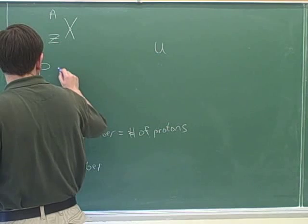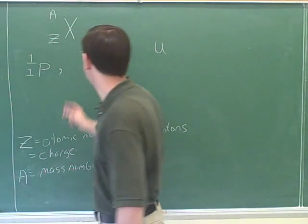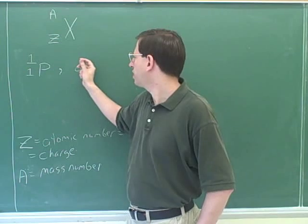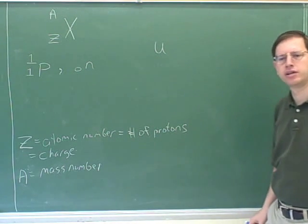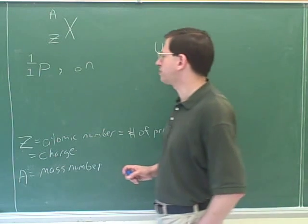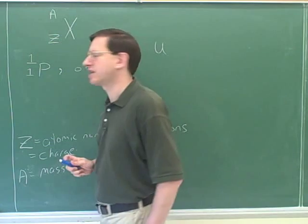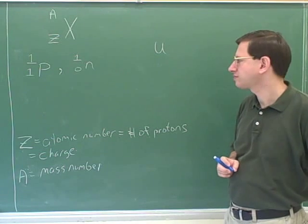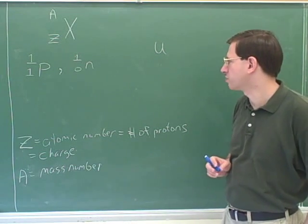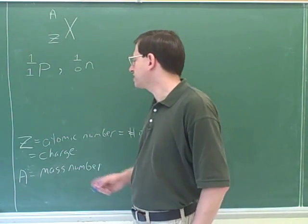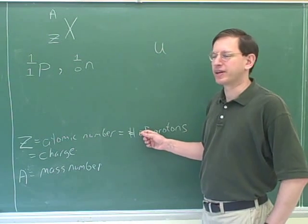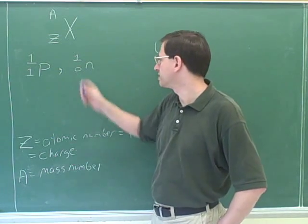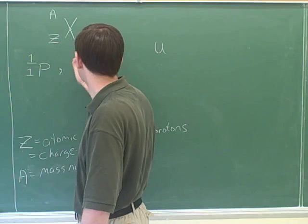Now let's do a neutron. What would be a good number for the charge? Zero. And the mass — it turns out that neutrons and protons have almost the same mass, so approximately one would be a good mass for the neutron as well. So the neutron has zero charge and a mass of one. You can see why thinking of Z as only the number of protons isn't general enough — it wouldn't quite make sense for a neutron. But you can always think about the charge, so Z in general is the charge.